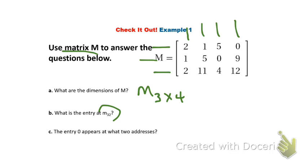What is the entry at M three, two? So again, I'm going to go to row three. So I'm down here at row three and column two. So count over column two. So row three, column two. And we find that the entry is the number 11.